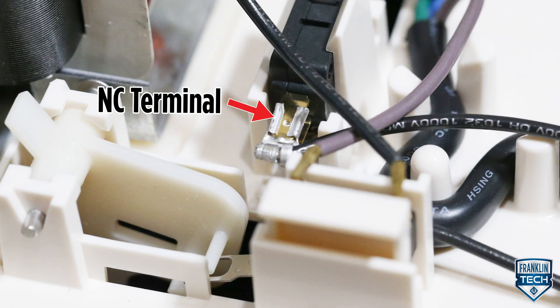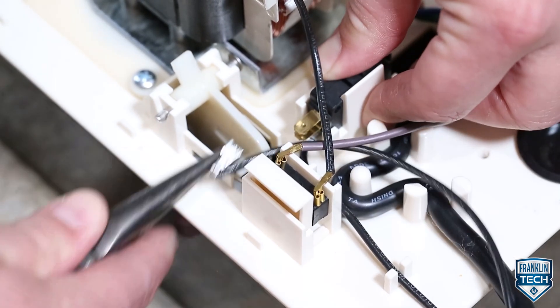The second option is to reconfigure the switch to the NC terminal. This option could be used to activate an external alarm or relay.